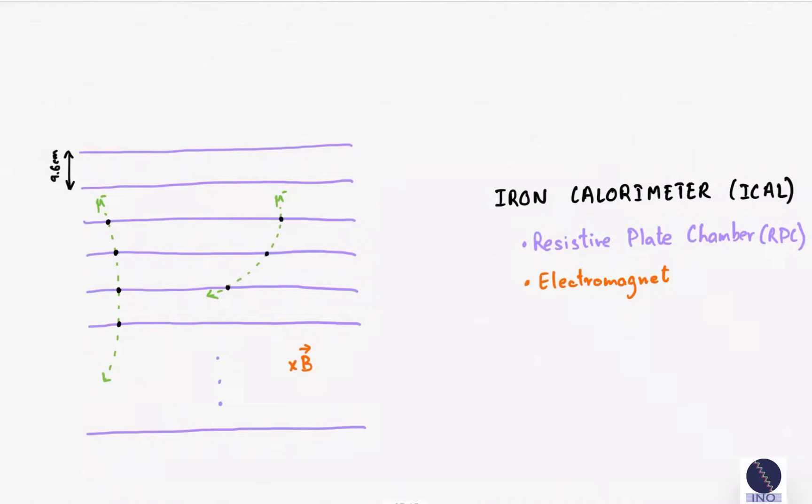How a pixel in RPC clicks has to do with the charged particle ionizing the gas in it. But a neutrino is chargeless. It will not ionize the gas mixture, so it will not make the RPCs click.